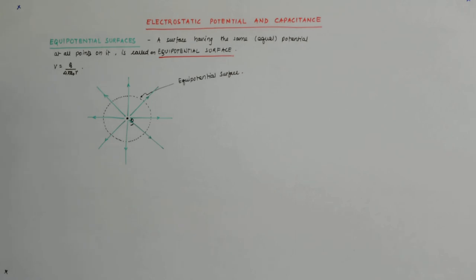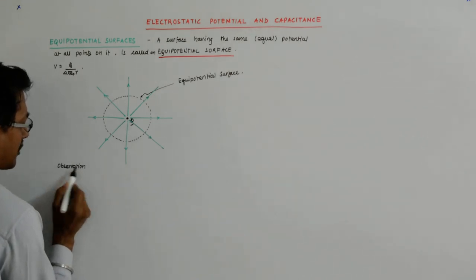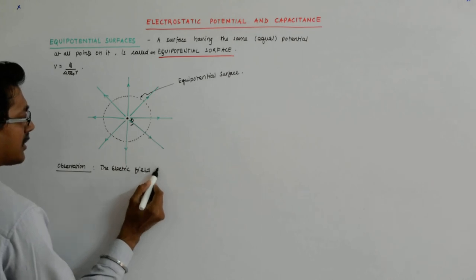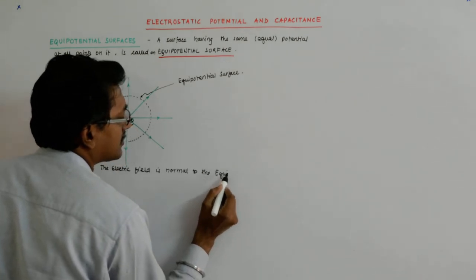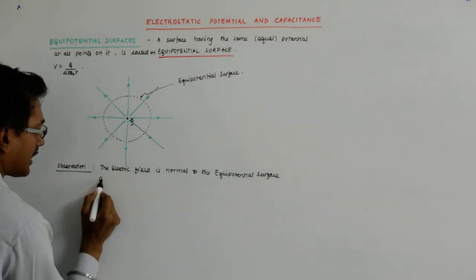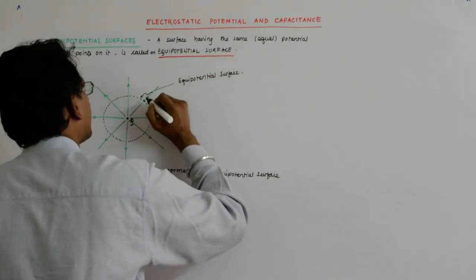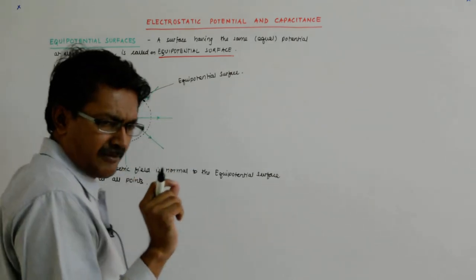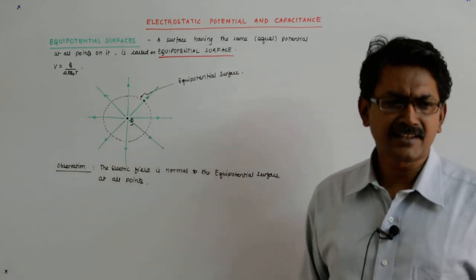The electric field lines cut the equipotential surface normally at all points. I make an observation that the electric field is normal to the equipotential surface at all points. All radius vectors at this surface — at any small area that looks like a plane — a radial vector will make an angle of 90 degrees at that point.